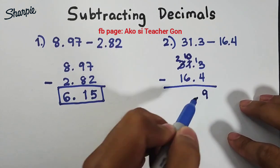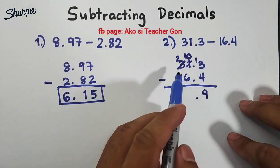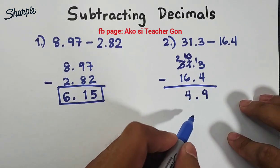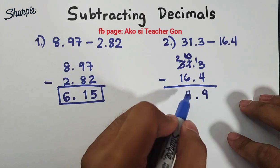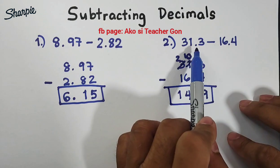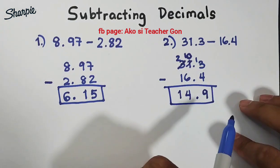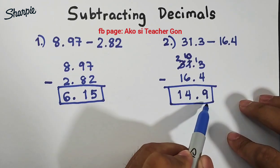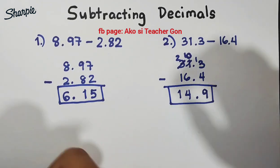Then copy their decimal point. Next, 10 minus 6 is equal to 4. Lastly we have 2 minus 1 that is equal to 1. Therefore guys when you subtract 31.3 by 16.4 their difference is 14.9. So I hope guys you learned something from this video.